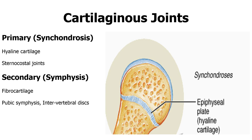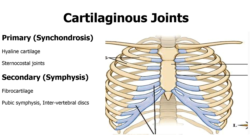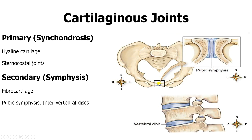The secondary cartilaginous joint has fibrocartilage between the two bones and is called a symphysis. There is the mental symphysis between the two halves of the manubrium, the pubic symphysis between the two pubic bones of the pelvis, and also the intervertebral disc. You can see the costal cartilage — hyaline cartilage joining the ribs to the sternum — as an example of synchondrosis. The pubic symphysis is an example of a symphysis, with fibrocartilage between the two pubic bones. The fibrocartilage of the intervertebral disc between two vertebral bones is also a secondary cartilaginous joint.